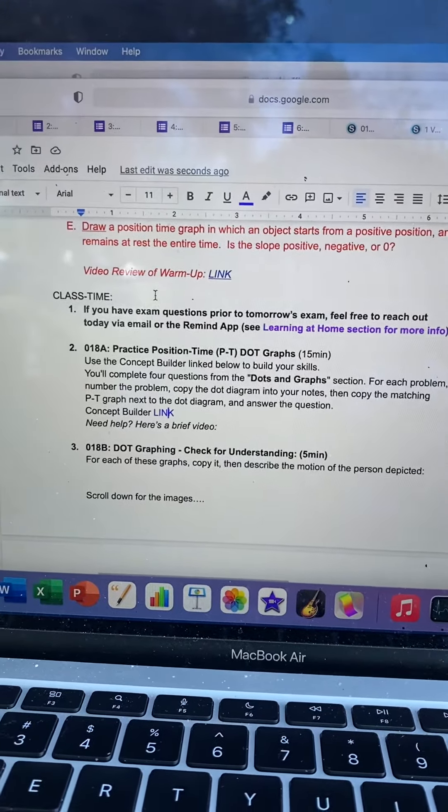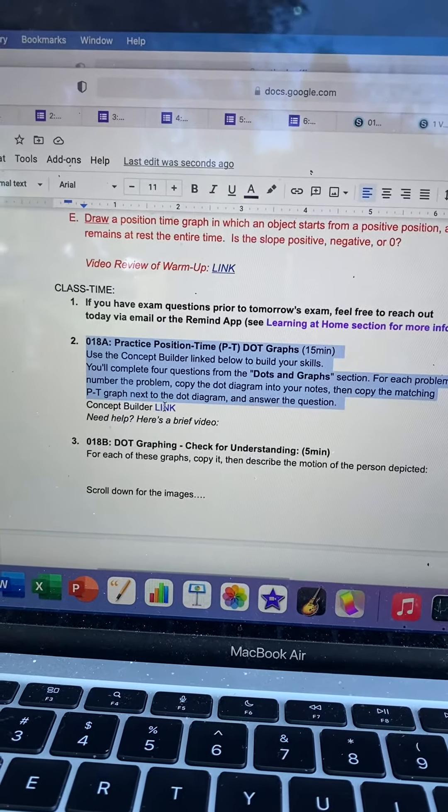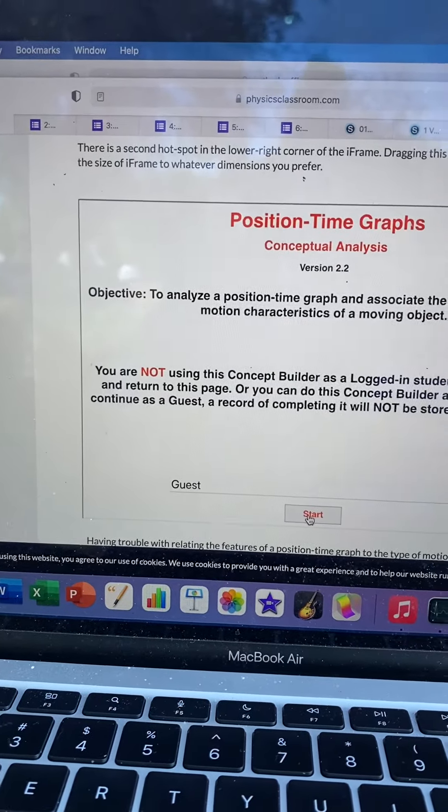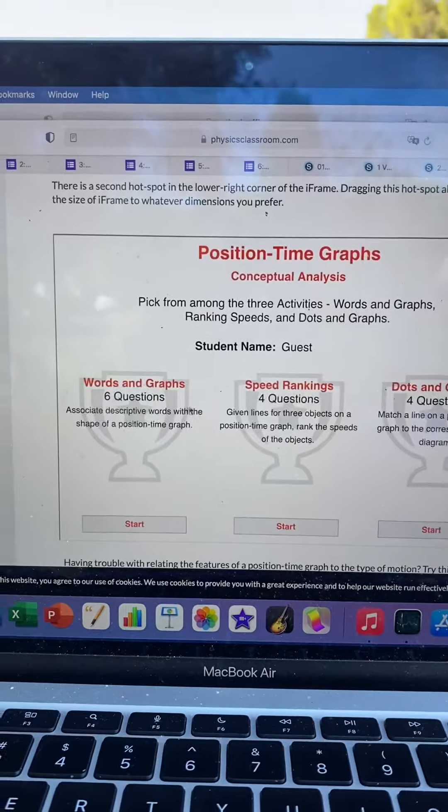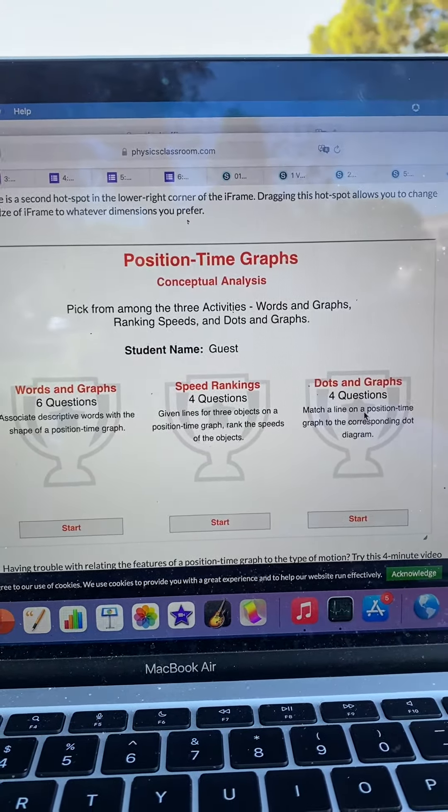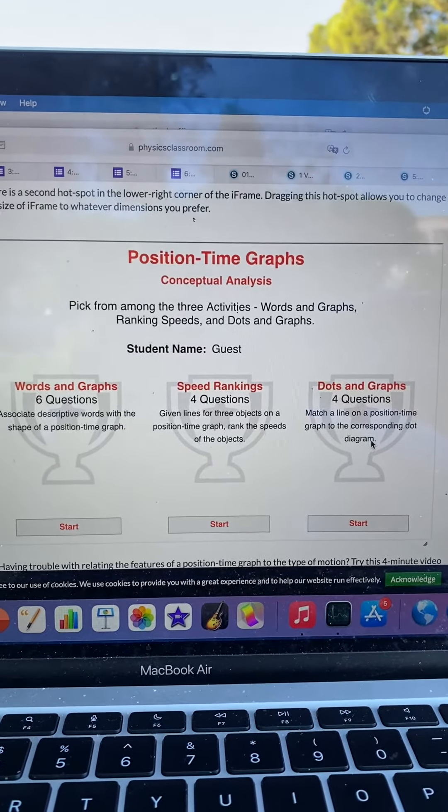After reading the instructions here about what you're going to do, you're going to click on the link. This should look pretty familiar to you. We worked on the first two of these last week, and now we're going to work on dots and graphs. We're going to match a line on a position time graph to the corresponding dot diagram.